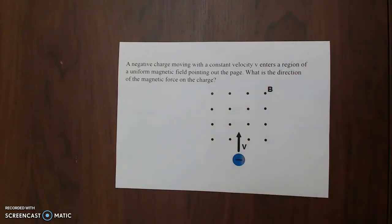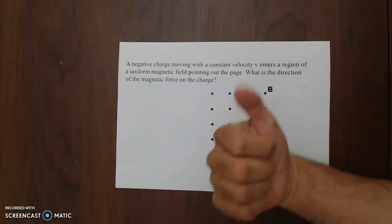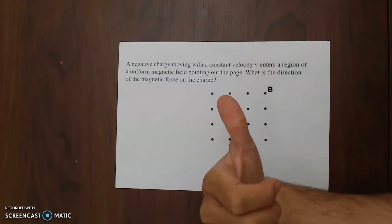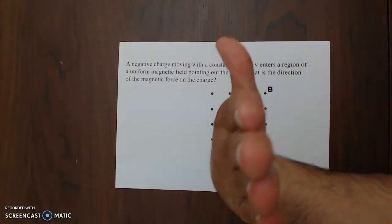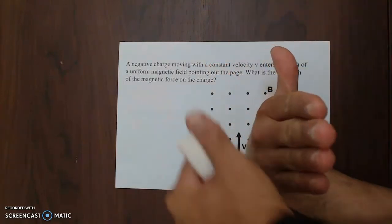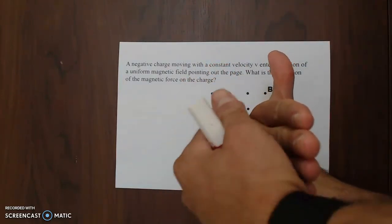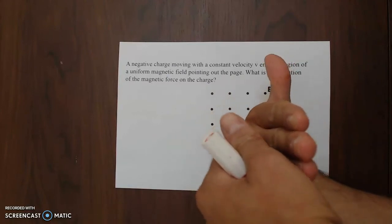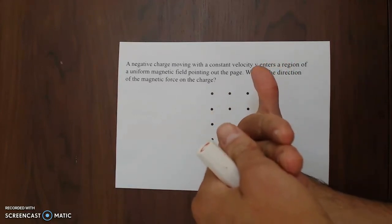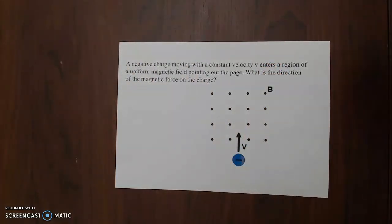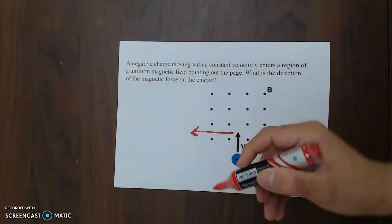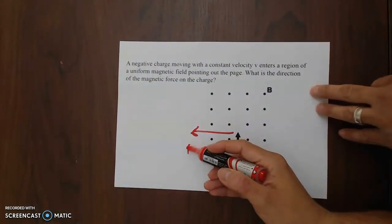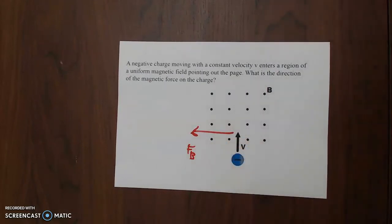Since it's a negative charge, I will pretend it's positive. The velocity with the thumb is going north, the magnetic field going out of the page toward me. The back of my hand presents the force direction acting on a negative charge within a magnetic field, which will be to the west or to the left.